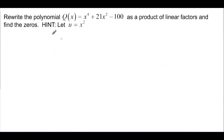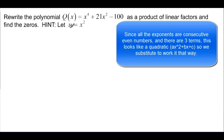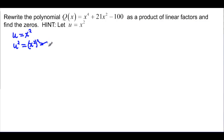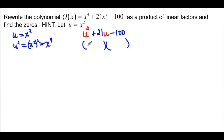Let's rewrite the polynomial q(x) = x⁴ + 21x² - 100 as a product of linear factors and find the zeros. The hint says let u = x², which means u² = x⁴. So instead of x⁴ we write u², instead of x² we write u, and we keep the minus 100. Now it's just a quadratic in u.